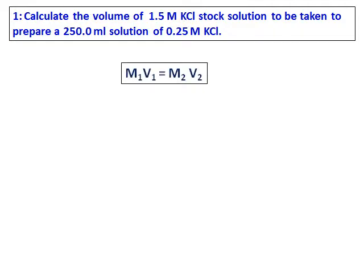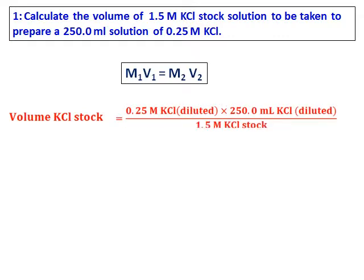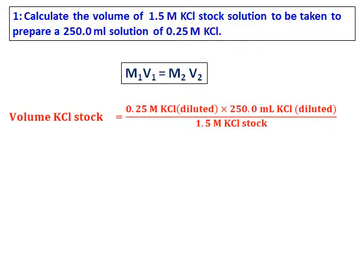We will use the formula M1V1 equals M2V2, where M1 and V1 are for the concentrated or stock solution, and M2 and V2 are for the diluted solution. Substituting the values, the volume of the KCl stock solution is calculated and it comes out as 41.67 milliliters.